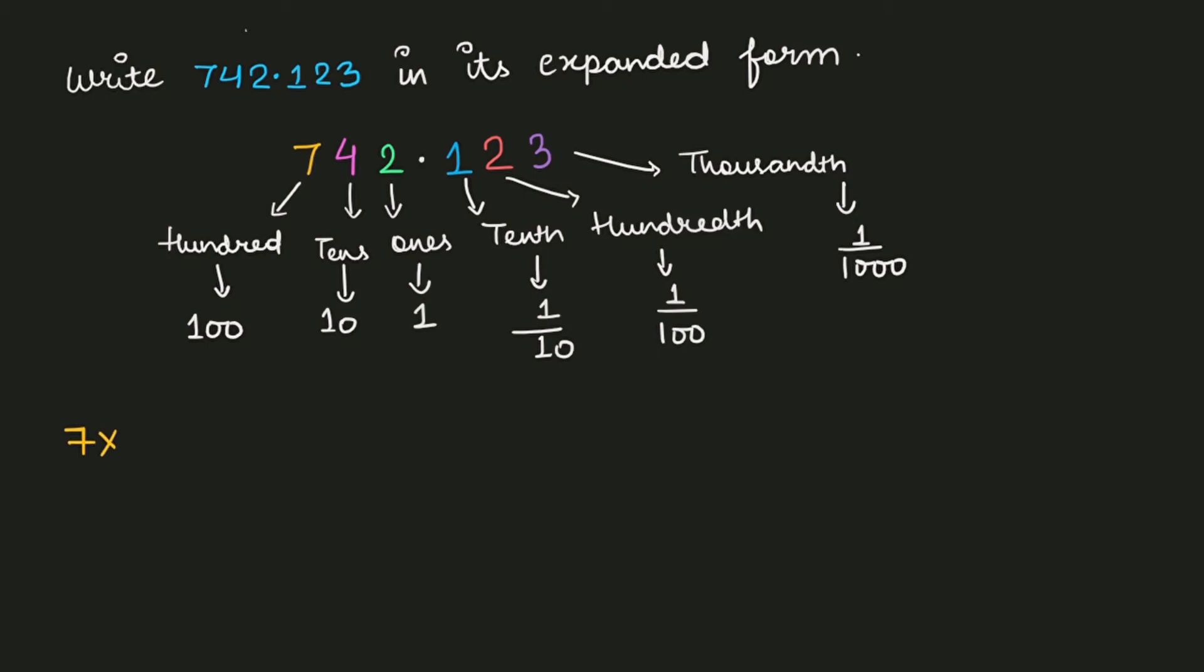So 7 into 100 plus the next digit which is coming after 7 is 4. So 4, the place value of 4 is 10. 4 is multiplied with its place value 10 plus 2. So the place value of 2 is 1.